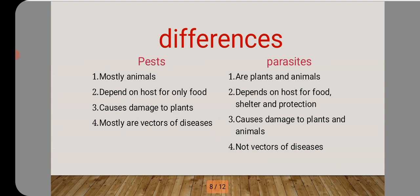Now let's look at the differences between a pest and a parasite. First, pests are mostly animals — rodents, nematodes, birds, and insects. But parasites can be plants and animals. Examples of plant parasites are mistletoe and dodder. Animal parasites include trypanosoma, plasmodium, the tick, and so on.